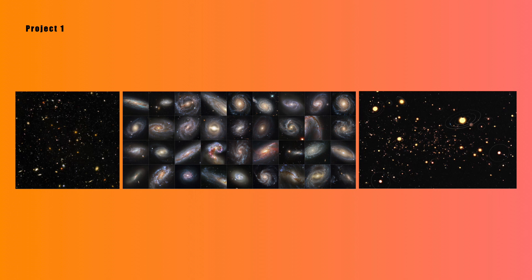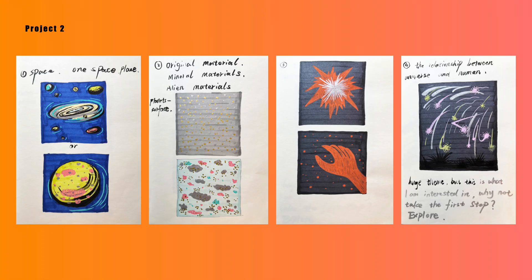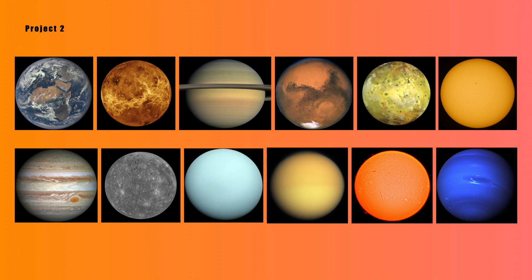In Project 2, I continued the exploration of Project 1 and focused on the exploration of different planets in the universe, as well as the materials and elements that make up the planets. In the process, I came up with a new idea: to use my imagination to create some fantasy planets and civilizations, to show a different way of living from the Earth — an imagination and creation of the unknown realm of the universe.